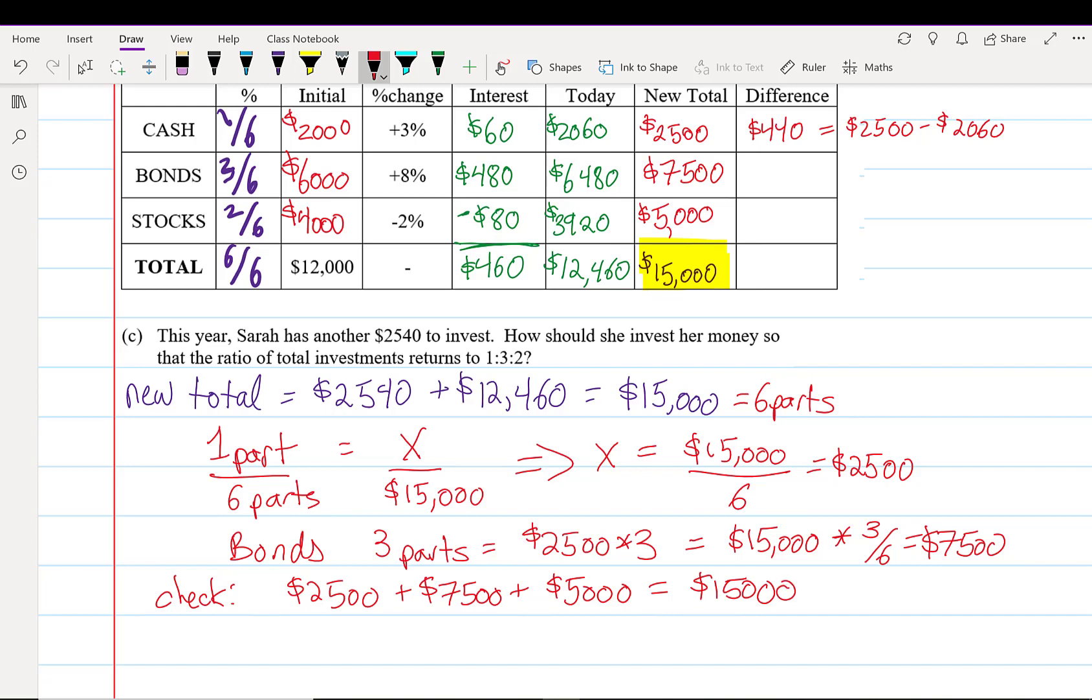Let's finish our differences. Subtraction tells us we need to invest $1,020 in bonds and $1,080 in stocks. I'm actually going to check and add those together, and not surprisingly, it still adds up to $2,540. So once Sarah invests her money this way, she will end up with an evenly balanced portfolio.